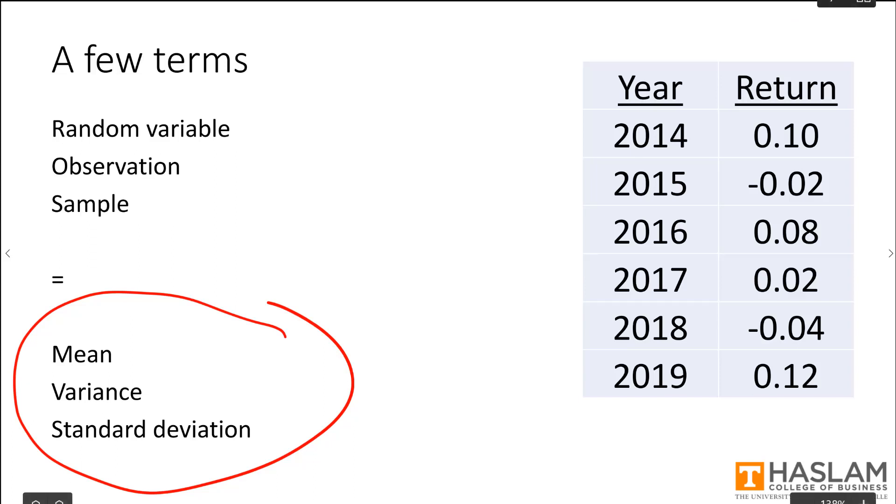A mean is an average, and so it says, on average, what value will the random variable take? It's not a guarantee that will happen in any given year, but it is a statement of what we expect to happen. Oftentimes, we would say a mean return. We would call a mean return an expected return.